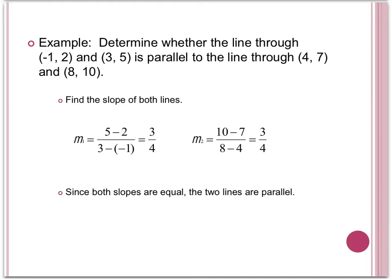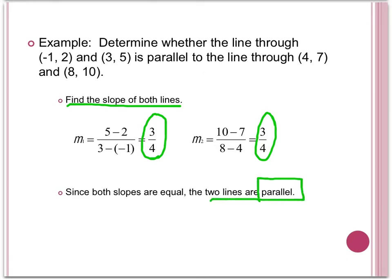Now let's do an example. Determine whether the line through negative 1, 2, and 3, 5 is parallel to the line through 4, 7, and 8, 10. We can tell if these two lines are parallel by finding the slope of both lines. By using the slope equation and plugging in the points, we find that the slope of the first line is 3 fourths. For the second line, we find that the slope is also 3 fourths. And since both slopes are equal, we know the two lines are parallel.